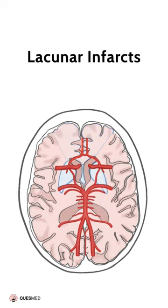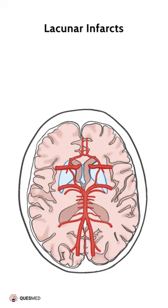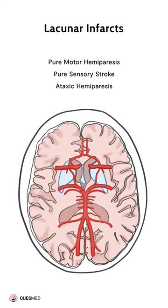Lacunar infarcts result from the occlusion of small perforating arteries that supply the subcortical areas of the brain. The stroke syndrome is more focal, with syndromes such as pure motor hemiparesis, pure sensory stroke, and ataxic hemiparesis.